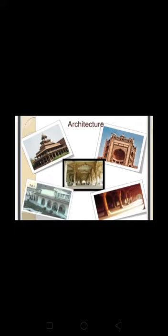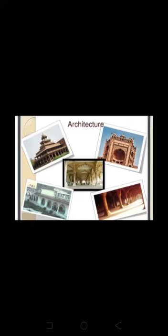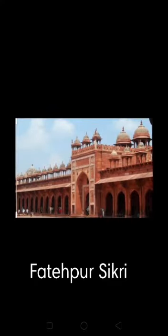Akbar was a great lover of art, architecture, and music. During his rule many monuments were built. He built a city near Agra and called it Fatehpur Sikri. This city was made of red sandstone and marble.